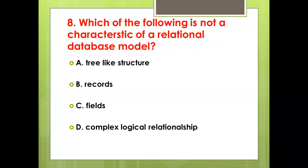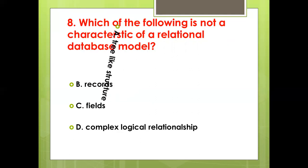Eighth bit: Which of the following is not a characteristic of a relational database model? Option A: Tree-like structure. Option B: Records. Option C: Fields. Option D: Complex Logical Relationship. Answer: Option A, Tree-like structure.